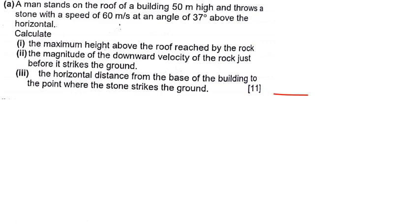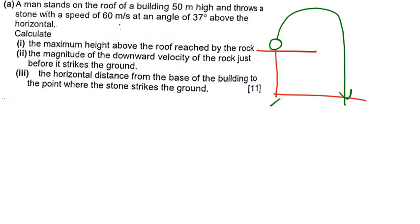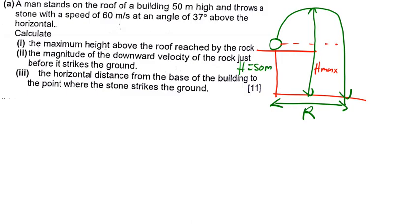This is the third case. You throw a ball from here and it goes until it lands here — that is the range. I'll call the building height capital H, which is 50 meters. From the roof going up to the peak, I'll call that small h — that's the maximum height above the roof. The total H max would be the full height from ground to peak. The angle is 37 degrees and the initial speed is 60 meters per second.